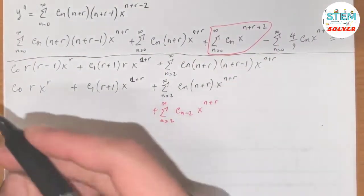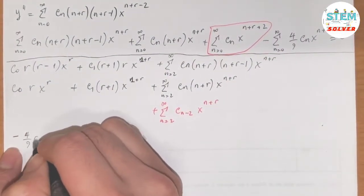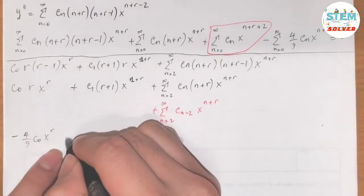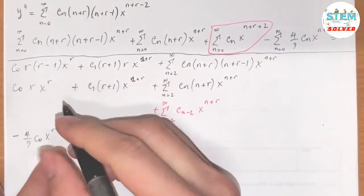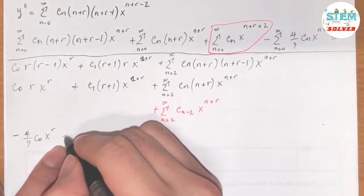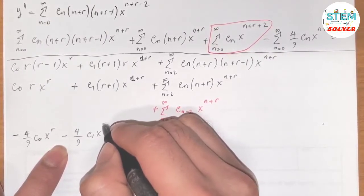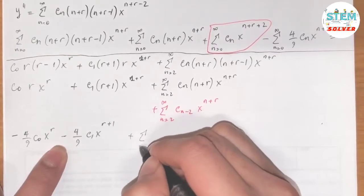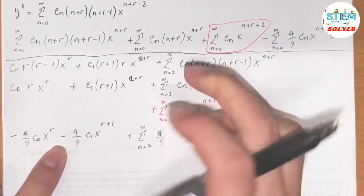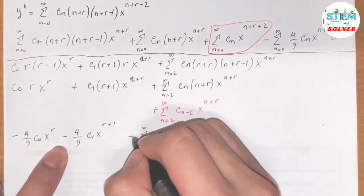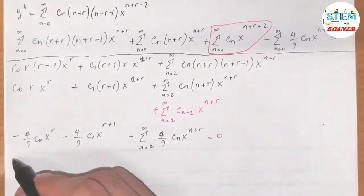And for the last term, running out: negative (4/9)c0 x to the r, minus (4/9)c1 x to the r+1, plus the power series from 2 to infinity of −(4/9)cn x to the n+r equals 0.